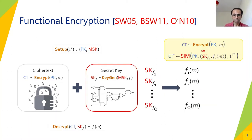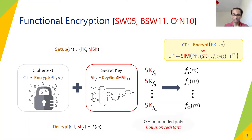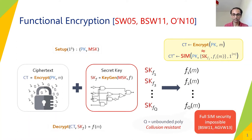Security for functional encryption informally requires that any PPT adversary should be able to learn only the function of the plaintext and nothing more. This is more formally captured by the existence of a simulator in the ideal world which simulates a ciphertext indistinguishable from the real-world ciphertext distribution, given only the length of the message and secret keys for Q functions and their outputs on the plaintext. When Q is an unbounded polynomial, we call the scheme collusion resistant or fully simulation secure. However, such security was shown to be impossible to achieve for FE for all circuits.